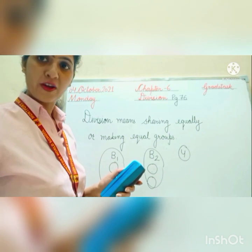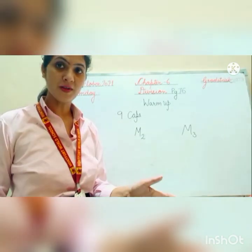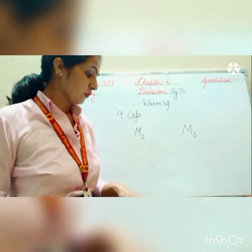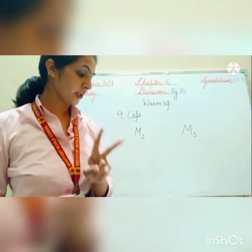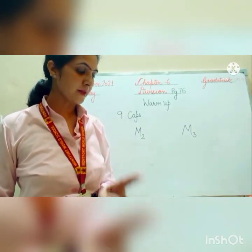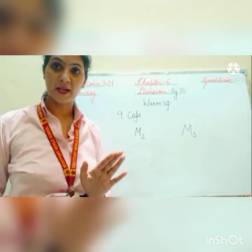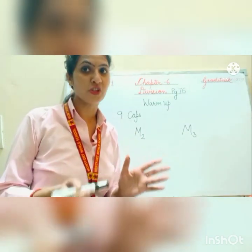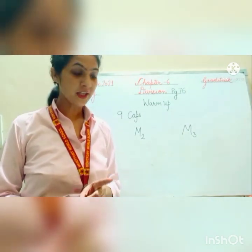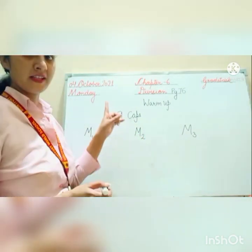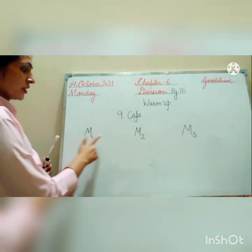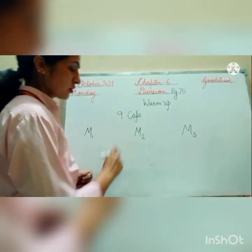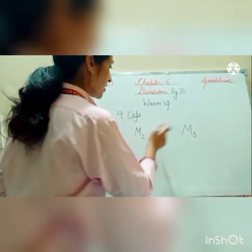I hope it is clear. So students, let us start with the warm-up on page number 76. The question is: share equally 9 caps for 3 monkeys. Circle the caps to make the equal groups. There are 9 caps, and there are 3 monkeys on the tree. So these 9 caps we have to equally share among the 3 monkeys. I am writing M1, M2, and M3 because I cannot draw monkeys here.